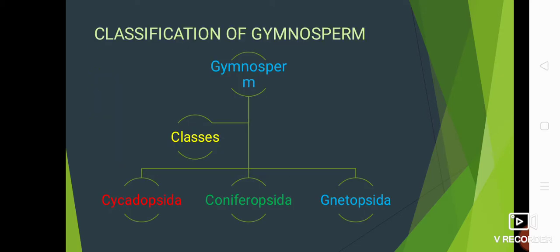Classification of gymnosperm is very important. Different systems of classification have been proposed from time to time by different taxonomists. While proposing a particular system, importance was given to both vegetative and reproductive characters, along with anatomy, embryology, palynology, and cytology. The outline of classification given by Sporny in 1977 classified gymnosperms into classes, which were further divided into orders on the basis of vegetative and reproductive characters.